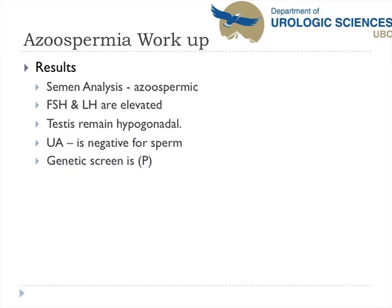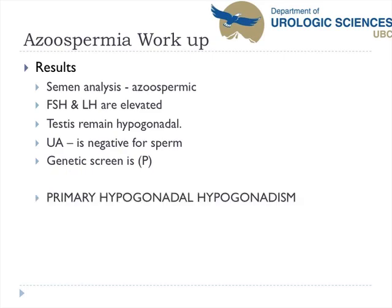The results come back: semen analysis confirms azoospermia, FSH and LH are elevated, the testes remain small and hypogonadal, urinalysis is negative for sperm, and the genetic screen is presently pending. This looks like a case of primary hypogonadism or primary failure of spermatogenesis.